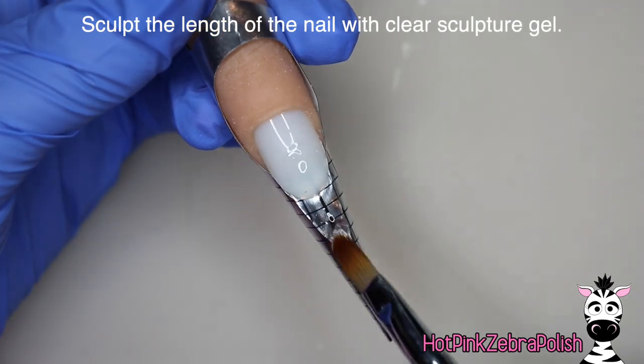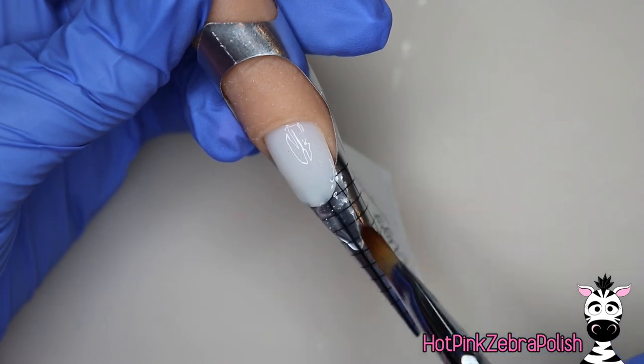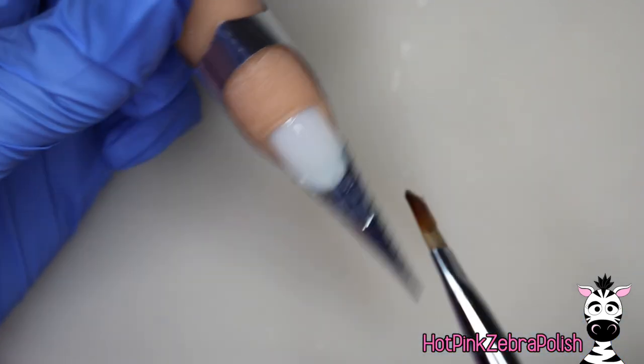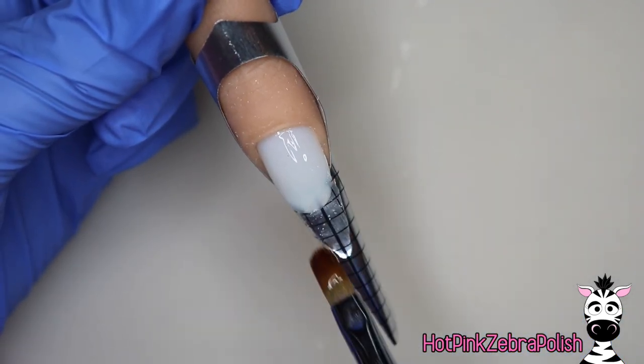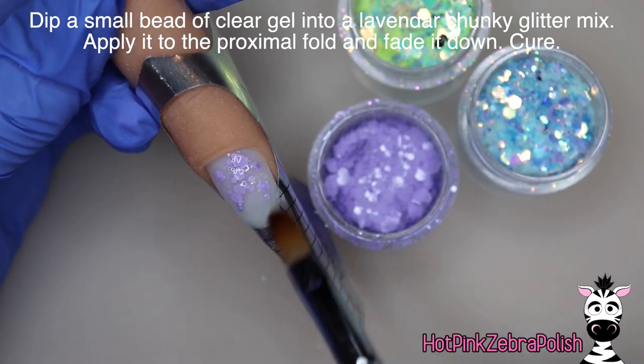Then we're going to sculpt the length of our nail using a clear sculpture gel. I did want to do this one all in gel as this month's class was dedicated around gel basics and I used a couple different kinds of gel in this video and you guys get to see them all.